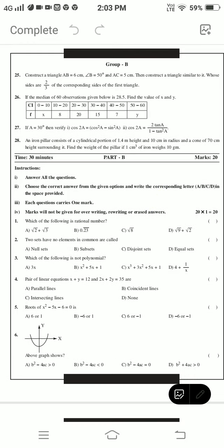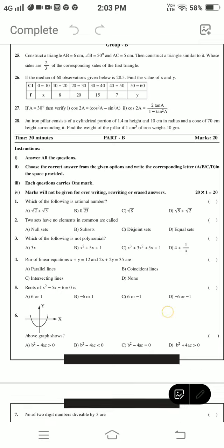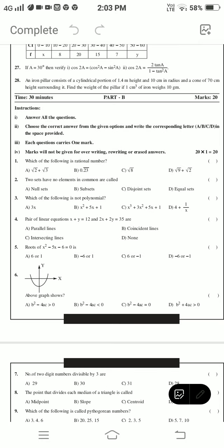Part B: 20 marks. Which of the following is an irrational number? Two sets have no elements in common, called? Which of the following is not a polynomial? Pair of linear equations x + y = 12, 2x + 2y = 35. Number of two-digit numbers divisible by 3 are?